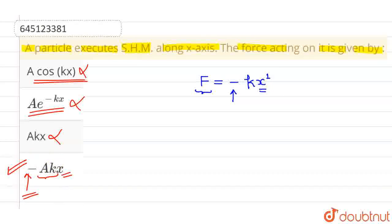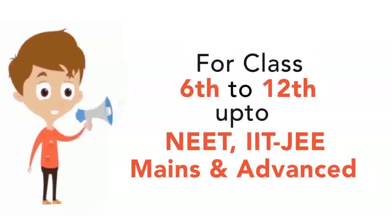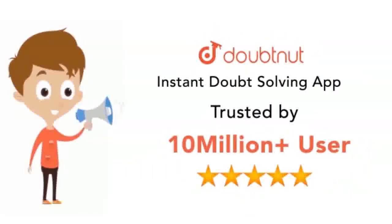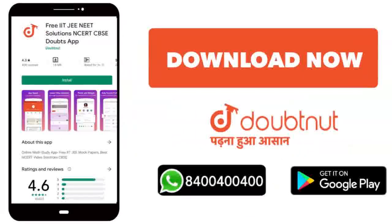I hope you understood. Thank you. Classes from 6 to 12 to NEET, IIT JAM, and advanced level. Trusted by 10 million plus students. Download the Doubtnet app today or WhatsApp your doubts to 8444477777.